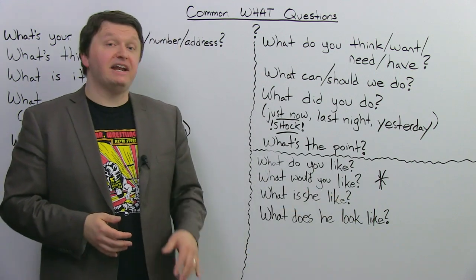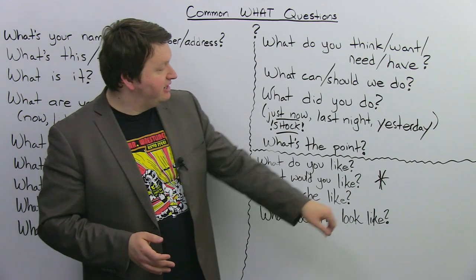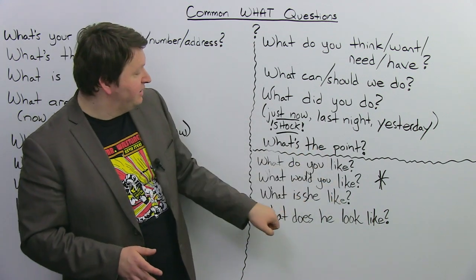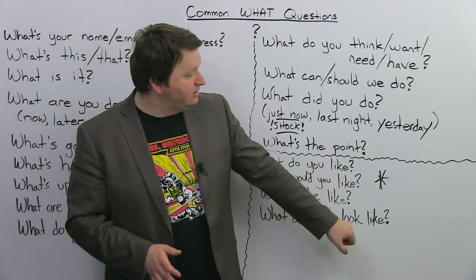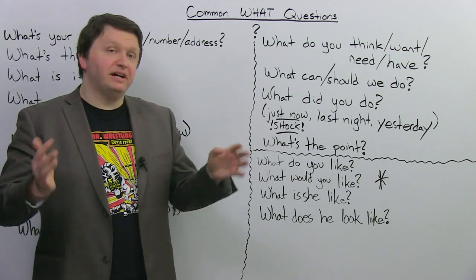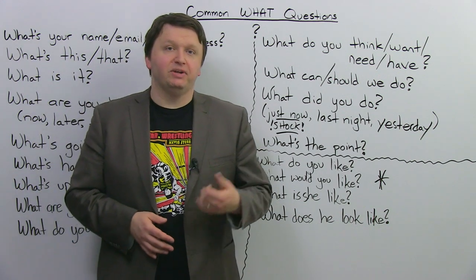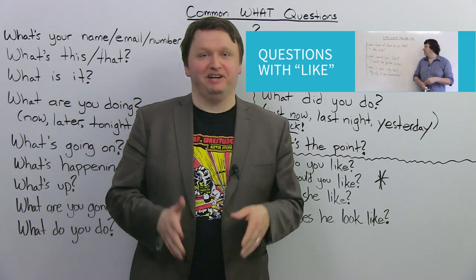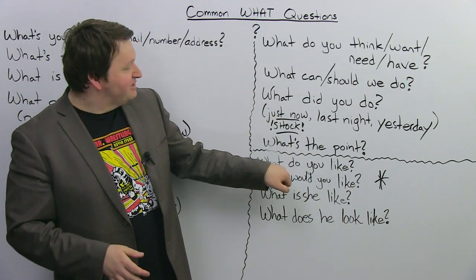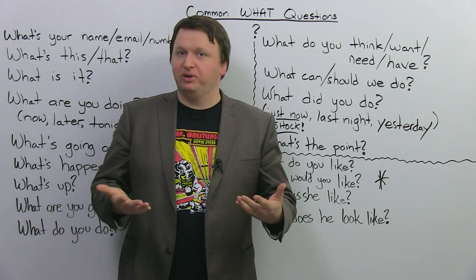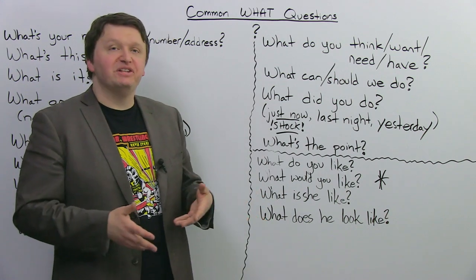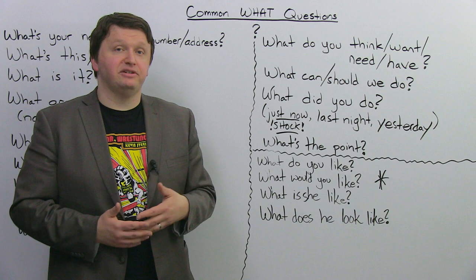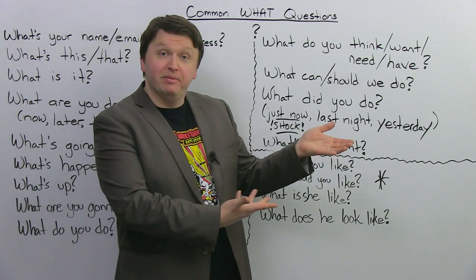Alright, finally, we have four questions that have something in common, which is why I blocked them off, put a star, and you'll notice they all have the word like. So, what do you like? What would you like? What is he like or she like? And what does he or she look like? Now, if you want a fuller understanding of these question types and what they mean, you can actually check out a video I did on this topic back in 2011 on questions with like. Yeah, 2011. I've been doing this for that long. Alright, so first, what do you like means, what is your preference in general. What do you like to eat? What do you like to do? Next, what would you like? What is your preference in the moment or in the future? What would you like to do this weekend? What would you like to have from the menu?